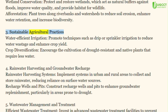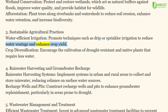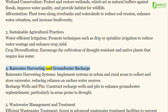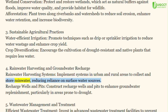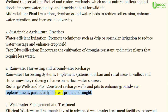Sustainable Agricultural Practices — Water-Efficient Irrigation: Promote techniques such as drip or sprinkler irrigation to reduce water wastage and enhance crop yield. Crop Diversification: Encourage the cultivation of drought-resistant and native plants that require less water. Rainwater Harvesting and Groundwater Recharge: Implement systems in urban and rural areas to collect and store rainwater, reducing reliance on surface water sources. Construct recharge wells and pits to enhance groundwater replenishment, particularly in areas prone to drought.